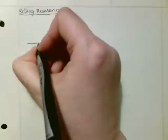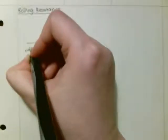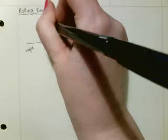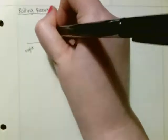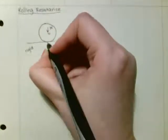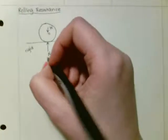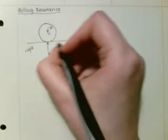This is rolling resistance. If you have a rigid surface with a cylinder on top, you're going to have the weight of that cylinder acting at the center. And then the normal force is going to act just right below it, perpendicular to the surface of contact.